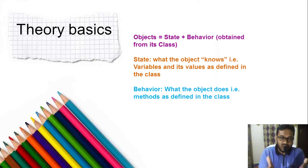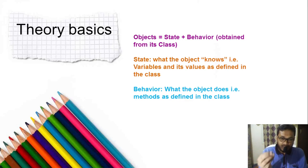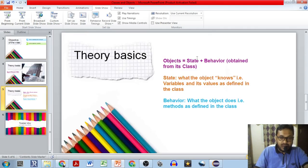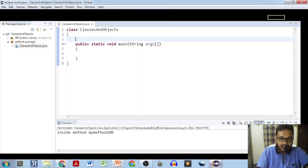In simple terms, state is what the object knows — the variables which are defined inside a class. Those are the things which the Java object knows. Behavior is what the object actually does. The methods defined in the class are used by the Java objects, and that is known as the behavior of that particular object. So that's the theoretical part; now we will see how these things can be implemented in a Java program.